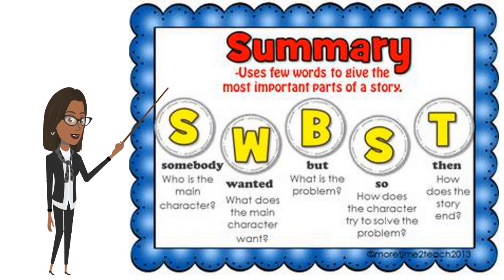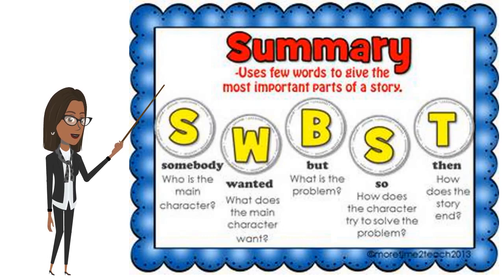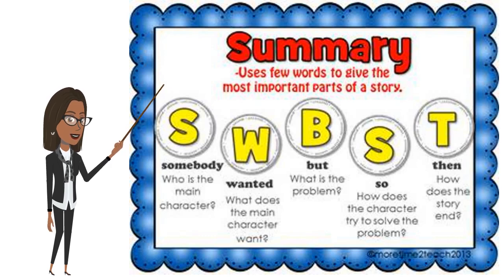To organize your summary, you can use the model: Somebody, Wanted, But, So, and Then. Somebody — who is the main character. Wanted — what does the main character want? But — what is the problem? So — how does the character try to solve the problem? And Then — how does the story end?